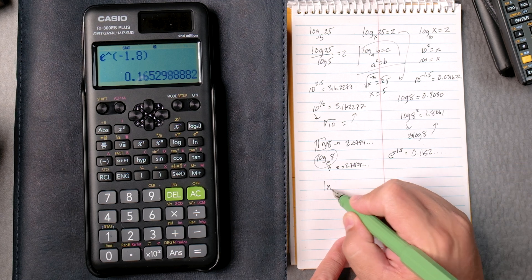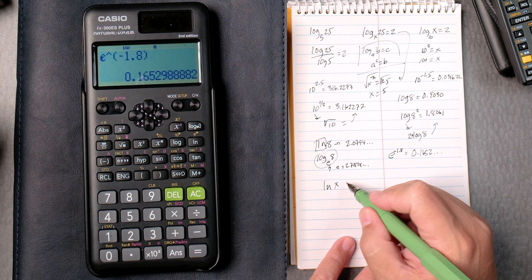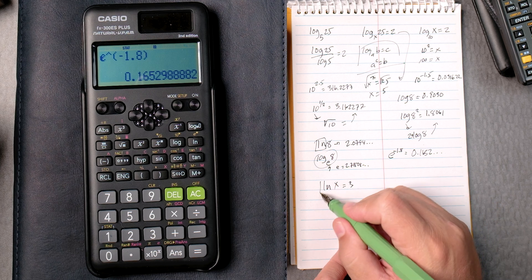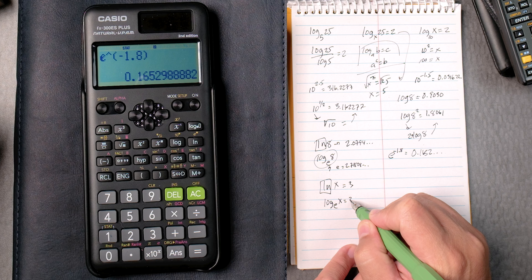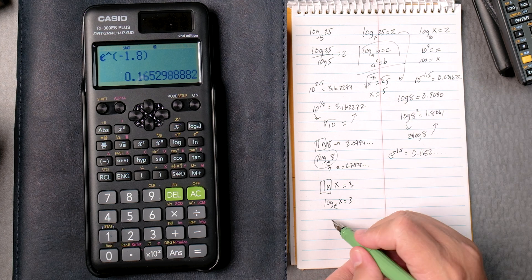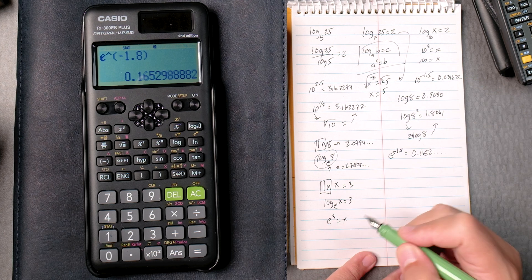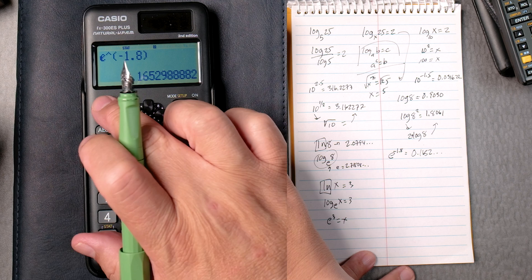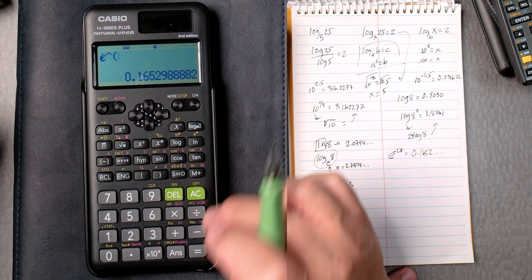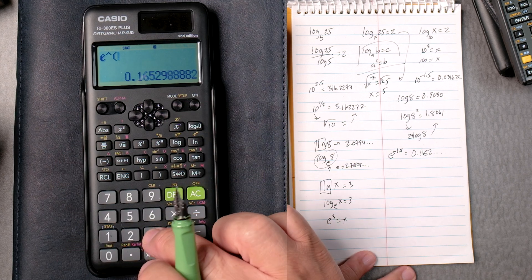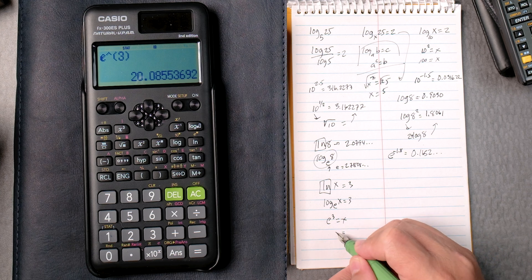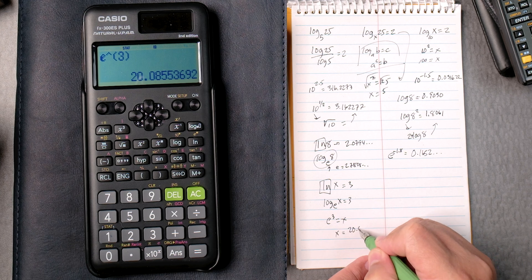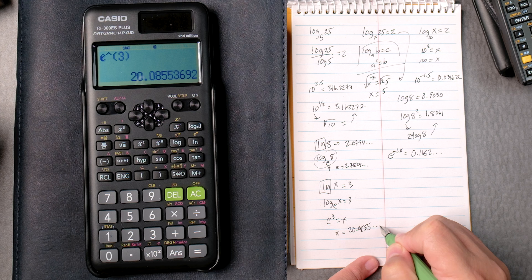And lastly, we got the natural log of x equals 3. Natural log is really the log base E. x equals 3. Then the rule. E to the third equals x. So shift E to the box. Put a 3 in there. Close it if you like. Equals. And that's going to give you 20.0855 and so forth. Pretty straightforward.